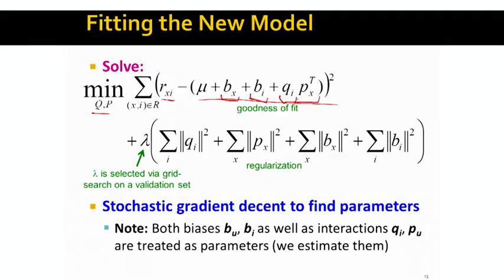So now our regularization term expanded. We have the regularization over the matrix factorization part, but then we also have the regularization term over the biases. And the same way as we did before, I can have now this massive equation.